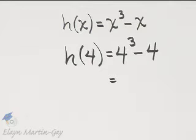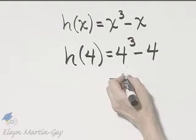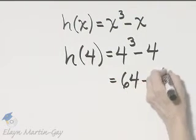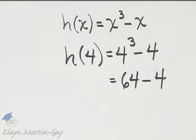Remember order of operations, 4 cubed is 4 times 4 times 4. 4 times 4 is 16 times 4 is 64 minus 4. And then we have 64 minus 4, which is 60. So h of 4 is 60.